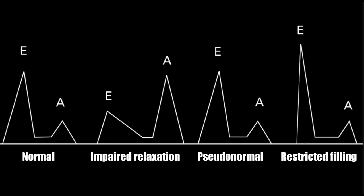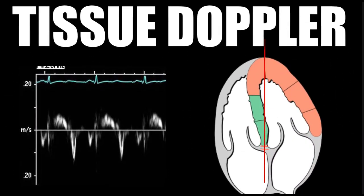That is one reason we started using tissue Doppler to evaluate the difference between normal and pseudonormal. Tissue Doppler is basically pulsed wave Doppler, but we're measuring the velocity of the tissue. We place the pulsed wave gate right at the annulus of the mitral valve on the septal side — the septal mitral valve annulus — right where the valve inserts into the septum.